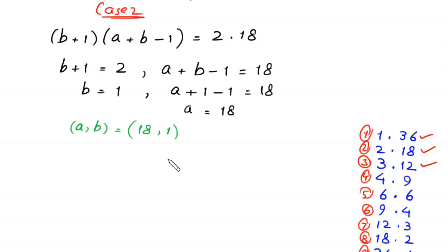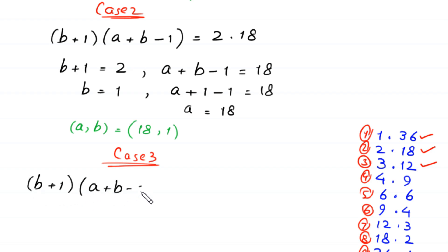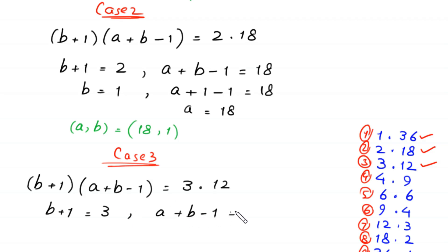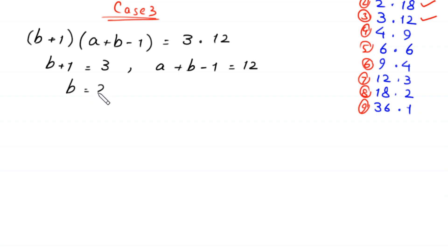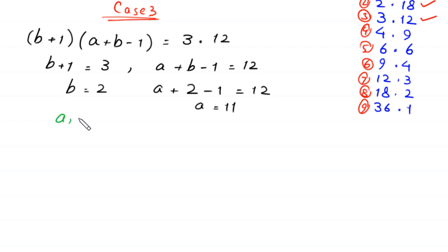In case 3, we set (b plus 1)(a plus b minus 1) equal to 3 times 12. So b plus 1 equals 3 and a plus b minus 1 equals 12. From here b equals 2, and substituting: a plus 2 minus 1 equals 12, so a equals 11. Third pair of solutions: (a, b) = (11, 2).